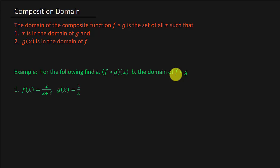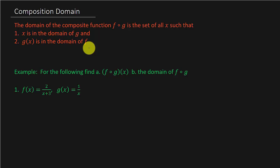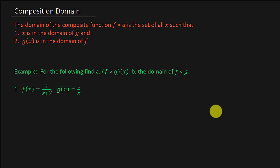We've got three problems to work. The domain of the composite function f circle g is the set of all x such that x is in the domain of g and g of x is in the domain of f. I don't know if that makes sense to you, but let me explain it and hopefully it will after this video.